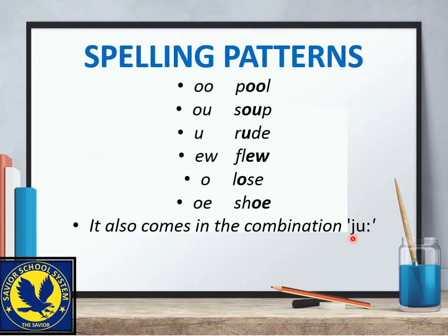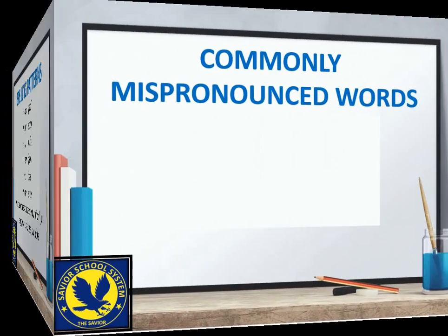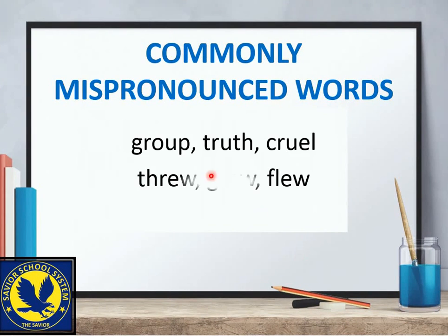Phonetic transcription میں small 'j' the ya sound کو represent کرتا ہے جو 'yes', 'young', 'yours' کے شروع میں آتی ہے۔ بعض دفعہ یہ اکٹھے combination میں آتی ہیں — جیسے 'few', 'tune', 'use', 'suitable'۔ یہ سب long uː vowel sound والے الفاظ ہیں۔ Commonly mispronounced words میں عام طور پر 'group' کو غلط کہہ دیا جاتا ہے۔